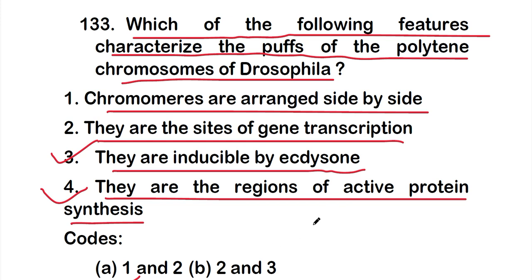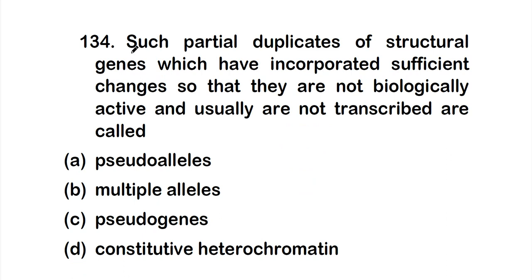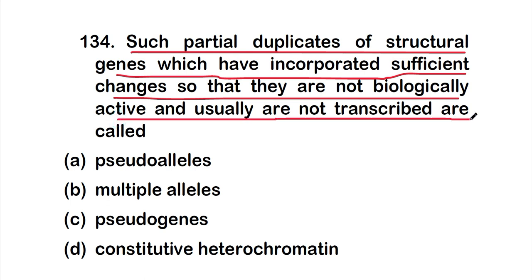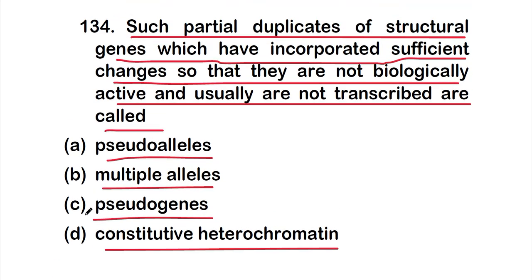Question 134: Partial duplicates of structural genes which have incorporated sufficient changes so that they are not biologically active and are usually not transcribed are called option A - pseudo alleles, option B - multiple alleles, option C - pseudogenes, or option D - constitutive heterochromatin. The right answer is option C, pseudogenes.